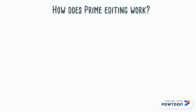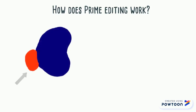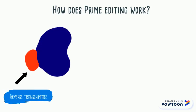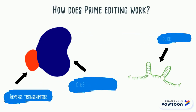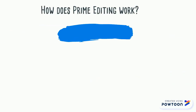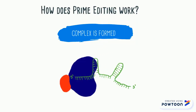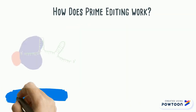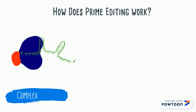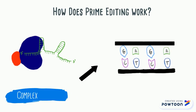Now, as you can see, we have all three components set up. The PEG RNA comes and forms a complex with the Cas9 enzyme and the reverse transcriptase. After the PEG RNA brings the complex to the target sequence, the Cas9 enzyme comes and nicks the DNA.